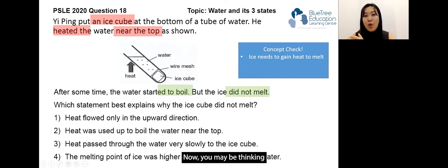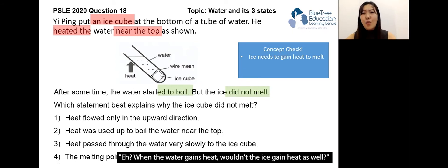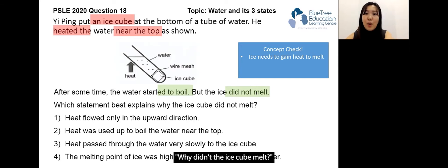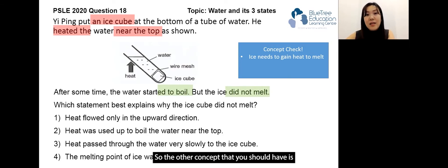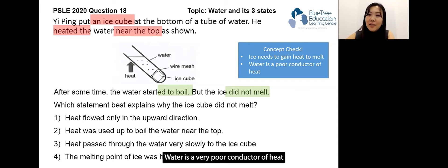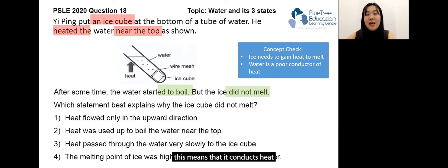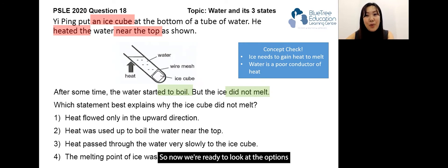You may be thinking: when the water gains heat, wouldn't the ice gain heat as well? Why didn't the ice cube melt? The other concept you should have is that water is a very poor conductor of heat, and since it's a very poor conductor of heat, it conducts heat very, very slowly to the ice cube. So now we are ready to look at the options.